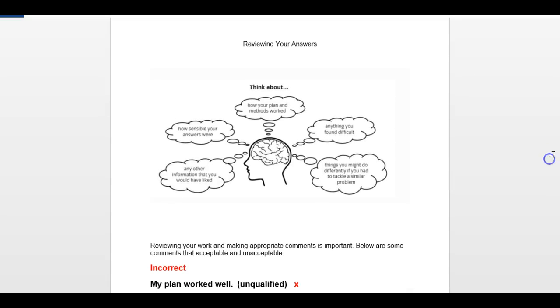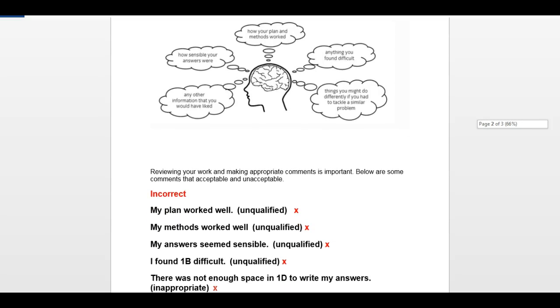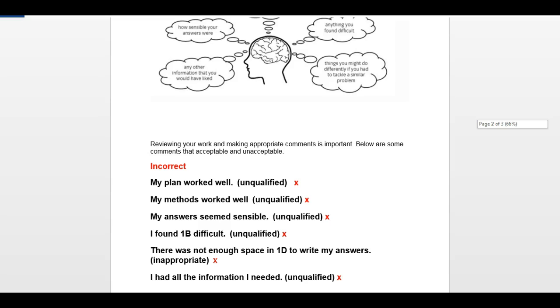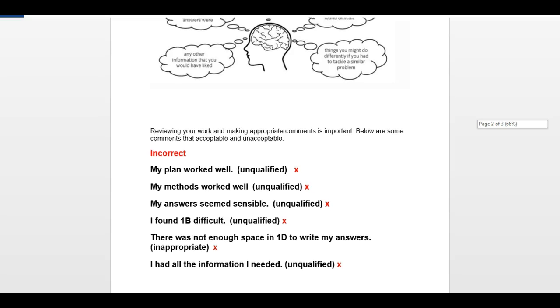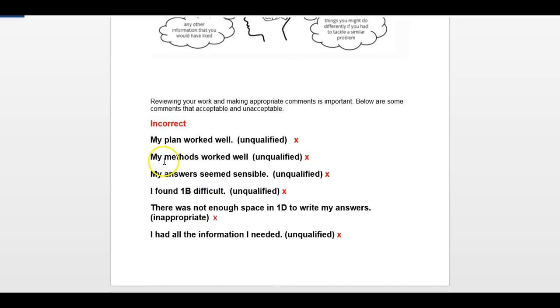In reviewing your answer, you'll see in some test papers you'll get this. And this is an image that's meant to help you review your answers and things to think about. Reviewing your work and making appropriate comments is important. And these are some of those comments that are incorrect or correct but may be unqualified and you won't get the mark for them. So as you can see here, it's things like my plan worked well, my methods worked well. It's basically giving your opinion, but not really explaining how and why. And those would be unqualified and you won't get the marks for them.